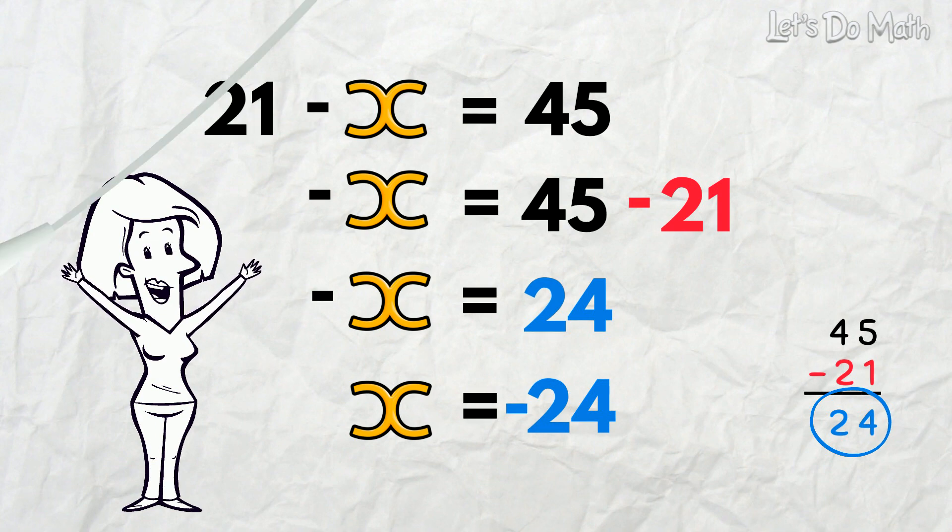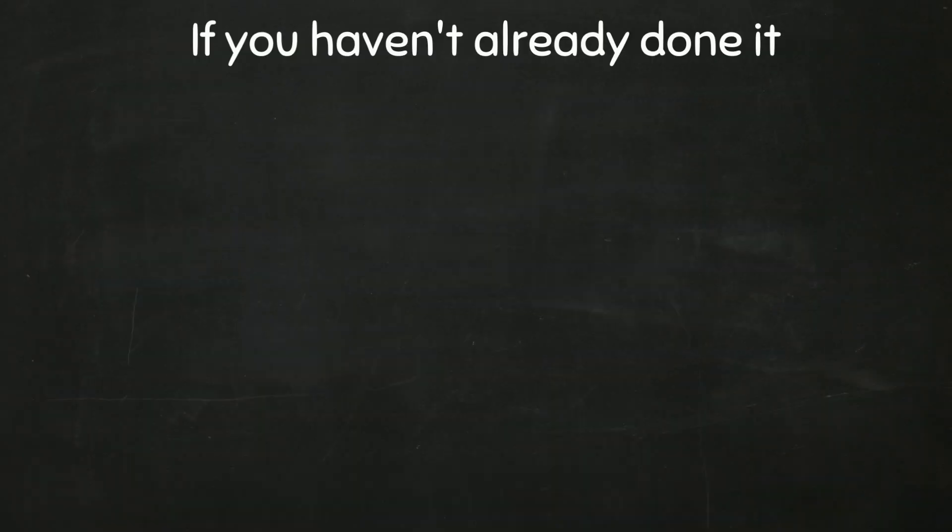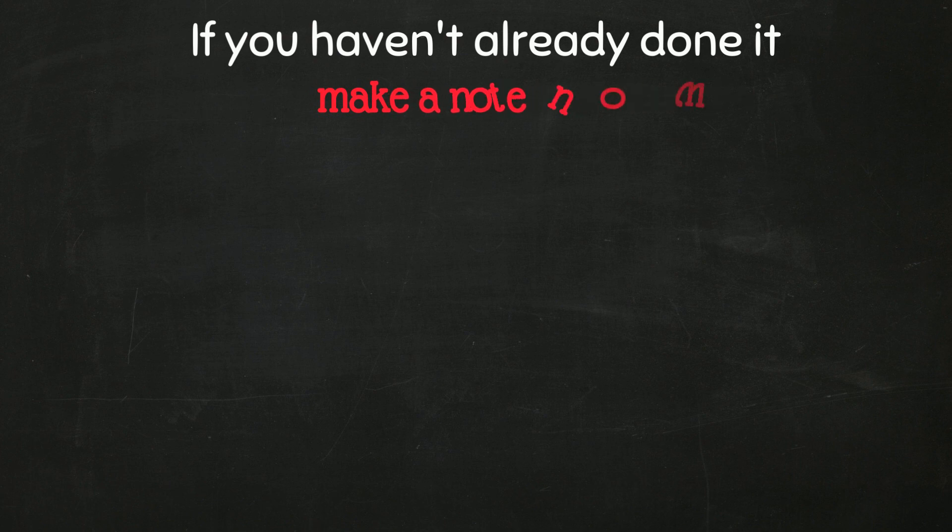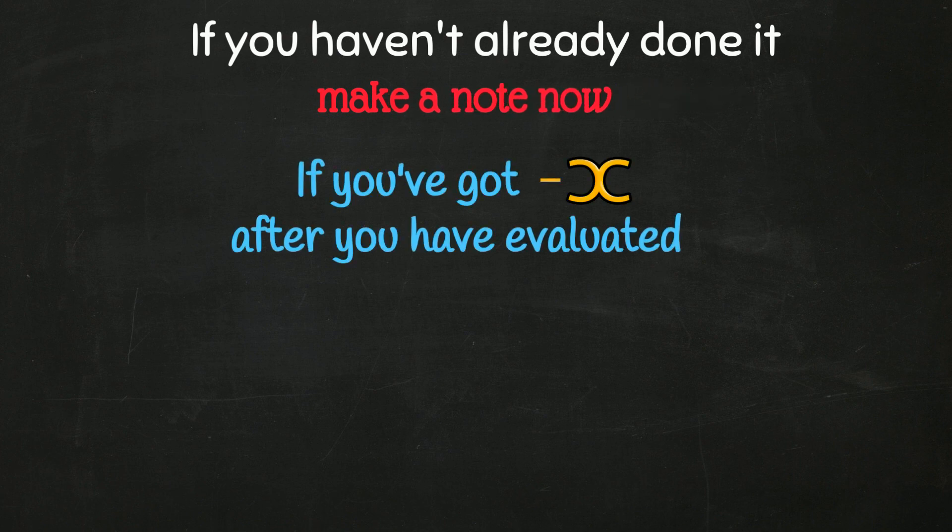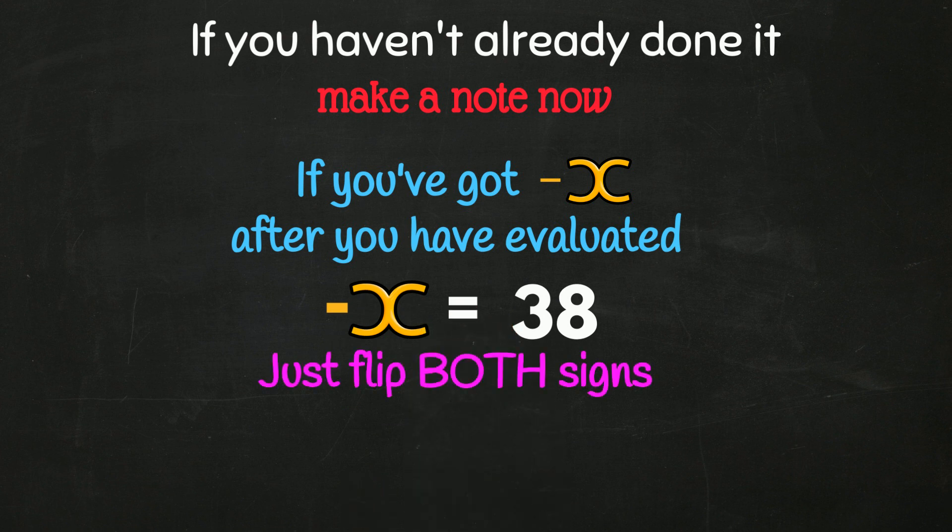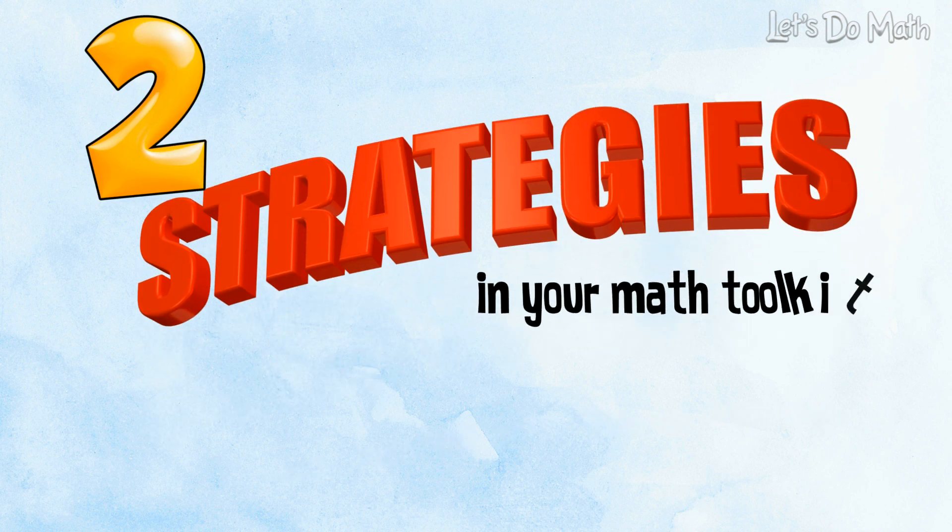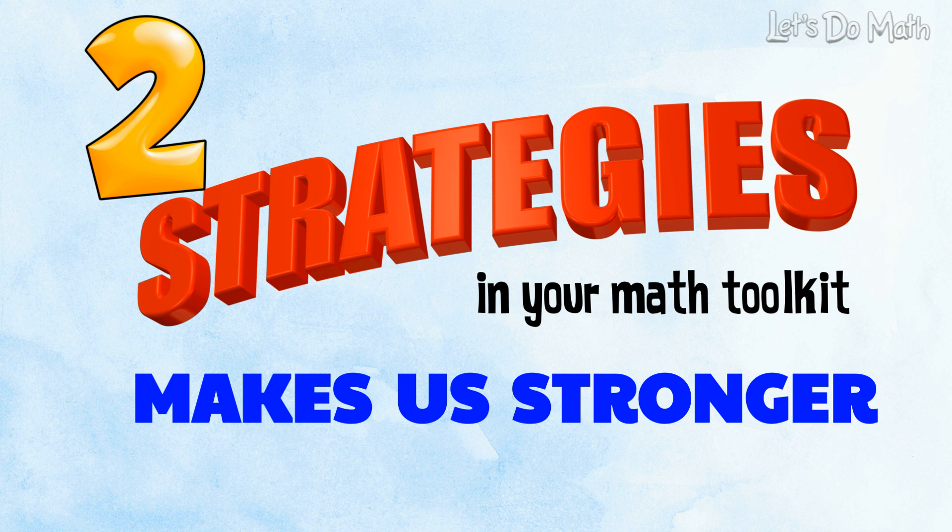Isn't that easy? If you haven't already done it, make a note of it now! If you've got negative x after you've evaluated, just flip both signs and it's all good! Having two strategies in your math toolkit makes us stronger!